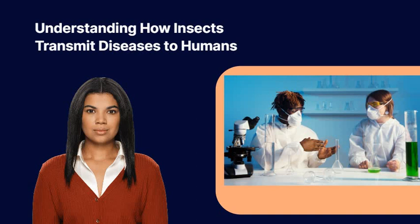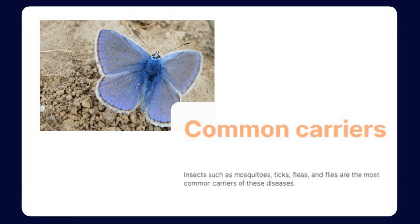Common pathogens spread by insects include certain species of hepatitis viruses, West Nile virus, malaria, typhoid, and plague. Insects such as mosquitoes, ticks, fleas, and flies are the most common carriers of these diseases. These insects use a combination of biological, physical, and chemical processes to transmit pathogens.